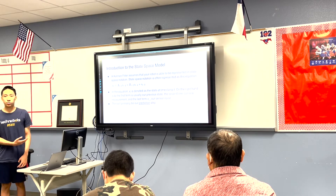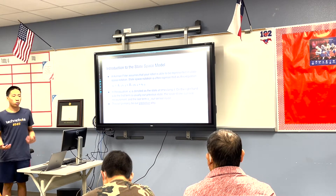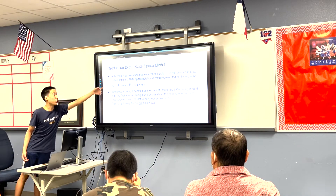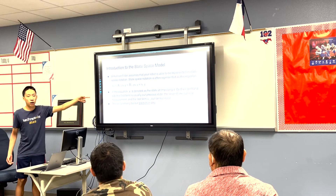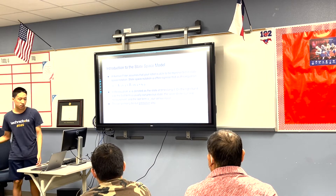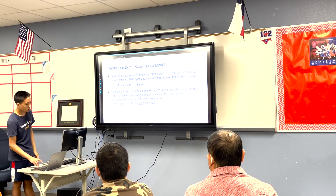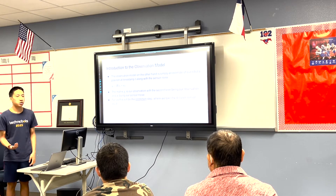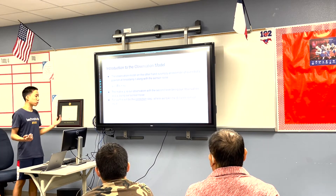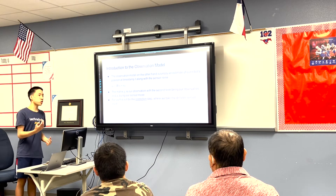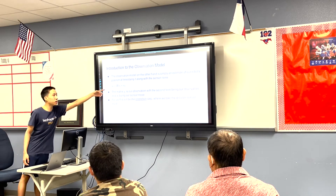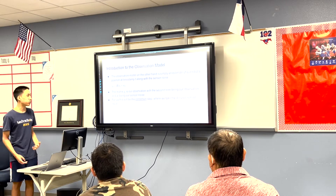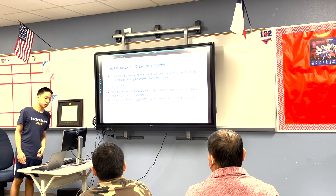This is the state space model — our robot's estimation phase, where we take our robot's previous position, our new input, along with sensor noise, and add these together to get our new estimate. Then we have the observation model. Instead of taking the robot's previous estimate and new input, we immediately have an observation telling us where our robot is on the field, also with sensor noise.